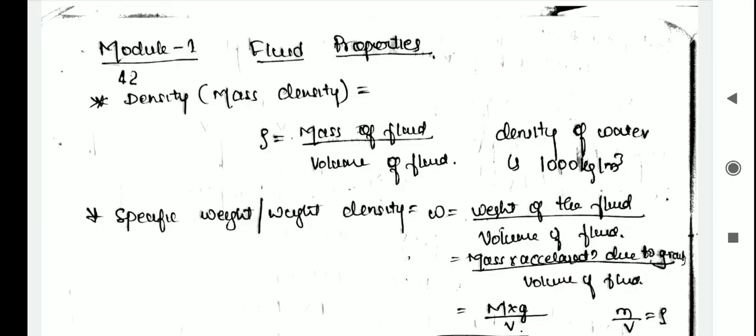In this video I am discussing fluid properties. The first one is mass density, defined as the ratio of mass of the fluid to its volume, or mass per unit volume. It is denoted by rho. The SI unit of mass density is kg per cubic meter.